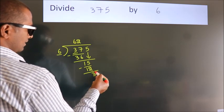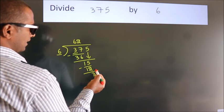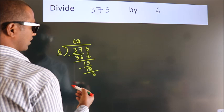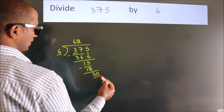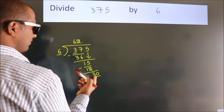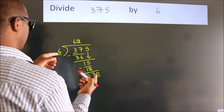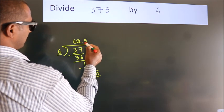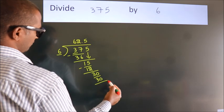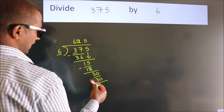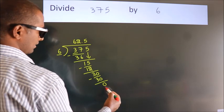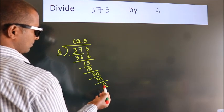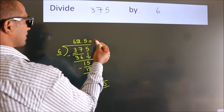After this, no more numbers to bring down. So what we do is put a dot and take 0, giving us 30. When do we get 30? In the 6 table, 6 fives, 30. Now we subtract. We get 0. Here we got remainder 0, so this is our quotient.